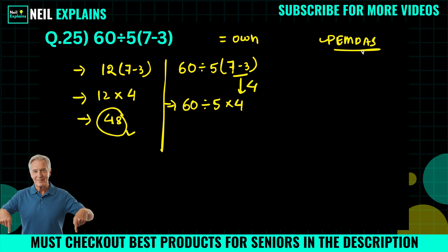Now we have 60 divided by 5 times 4. As you know, multiplication and division have the same priority, and in that case we have to operate from left to right. So here, 60 divided by 5, we will get 12 times 4, which equals 48.